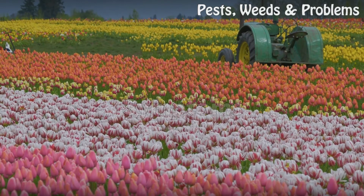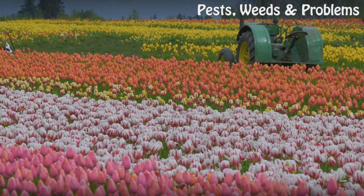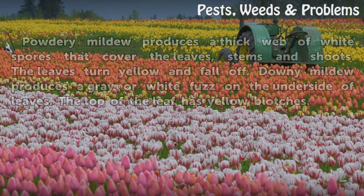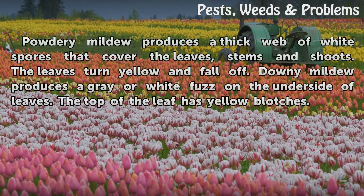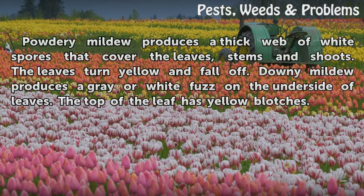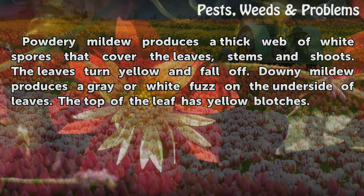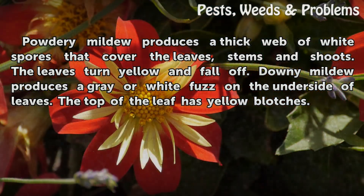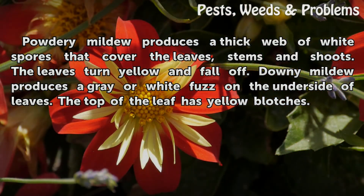Symptoms: Powdery mildew produces a thick web of white spores that cover the leaves, stems, and shoots; the leaves turn yellow and fall off. Downy mildew produces a gray or white fuzz on the underside of leaves, while the top of the leaf has yellow blotches.